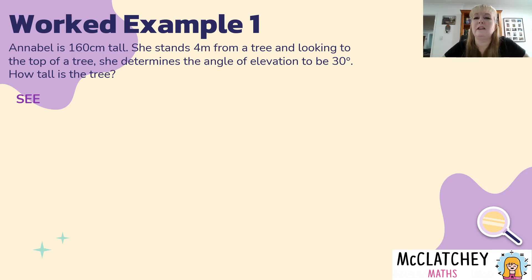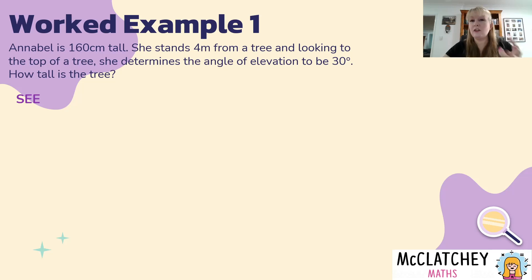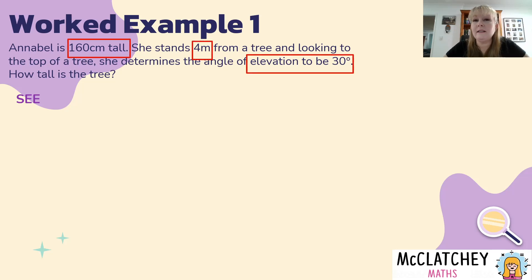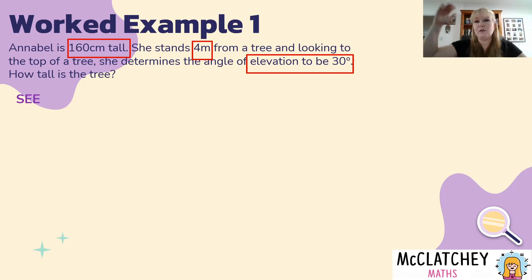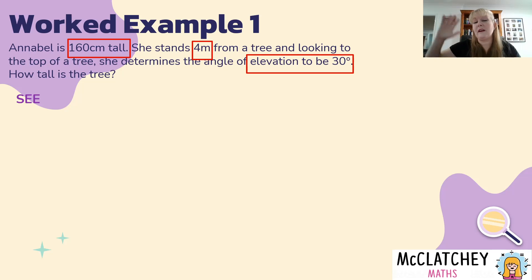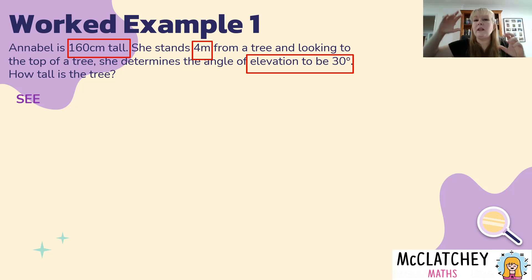You might be wondering how she worked out that the angle of elevation was 30 degrees — there are instruments called clinometers that measure an angle when you look out of them; people in surveying use very fancy versions of those. Using the See part of the problem solving model, the key pieces of information are: Annabelle's height of 160 centimeters, the fact that she and the tree are standing on the same flat ground, and that her line of sight starts at her eyes. We know she's standing four meters from the tree, and we're told the angle of elevation — those are our three key pieces of information.